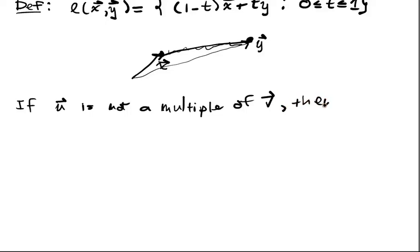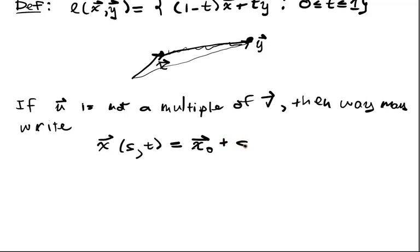Then we may also, then we may write, now X of S, T, or S and T are two parameters, equal to X naught. So I fix one point on the plane, and then I add S, U's,